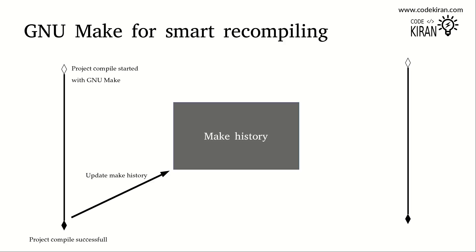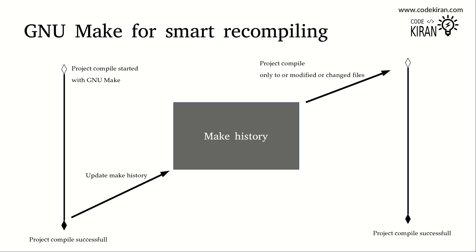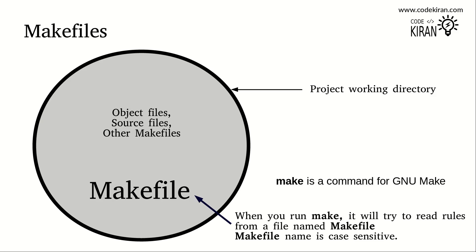When you start recompiling, GNU make will read all the history of timestamps of your software product. If any one of the features is updated or compiled, the timestamp of that object file or source code will be changed. GNU make compares this make history against the present state, so it only compiles the updated files — giving you fast compilation. You don't need to recompile files whose timestamps haven't changed. Finally, it updates make history for future recompilations.